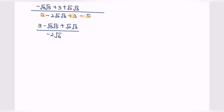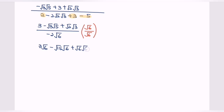Again, we will have 3 plus square root of 6, over negative 2 square root of 6. We need to multiply again by the conjugate square root of 6. Kindly expand the situation: we have 3 square root of 6 minus square root of 15 multiplied with square root of 6, plus square root of 6 over negative 2 multiplied with square root of 6 multiplied with square root of 6.